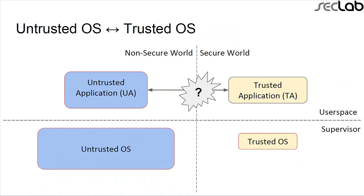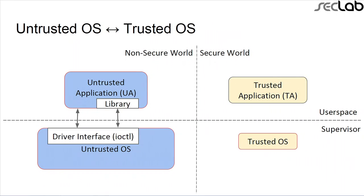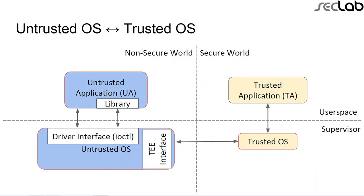Untrusted applications need to talk to trusted applications, but there's no direct channel between them. What happens is the untrusted OS exposes a driver interface — an ioctl — which the untrusted application contacts either directly or through a user-mode library to send a request. The request is sent to the trusted OS through a standard TEE interface. In ARM, this is called SMC — Secure Monitor Call. The trusted OS then forwards the request to the corresponding trusted application.